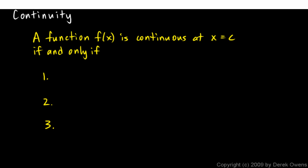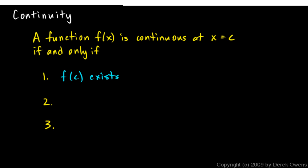We're still talking about continuity and I'm going to spell out a specific rigorous definition of continuity. A function f will be continuous at x equals c if and only if: first, f(c) exists. So the function has to exist at a certain x value in order for it to be continuous at that x value. If a function is not defined at a particular x value, it cannot be continuous at that x value.